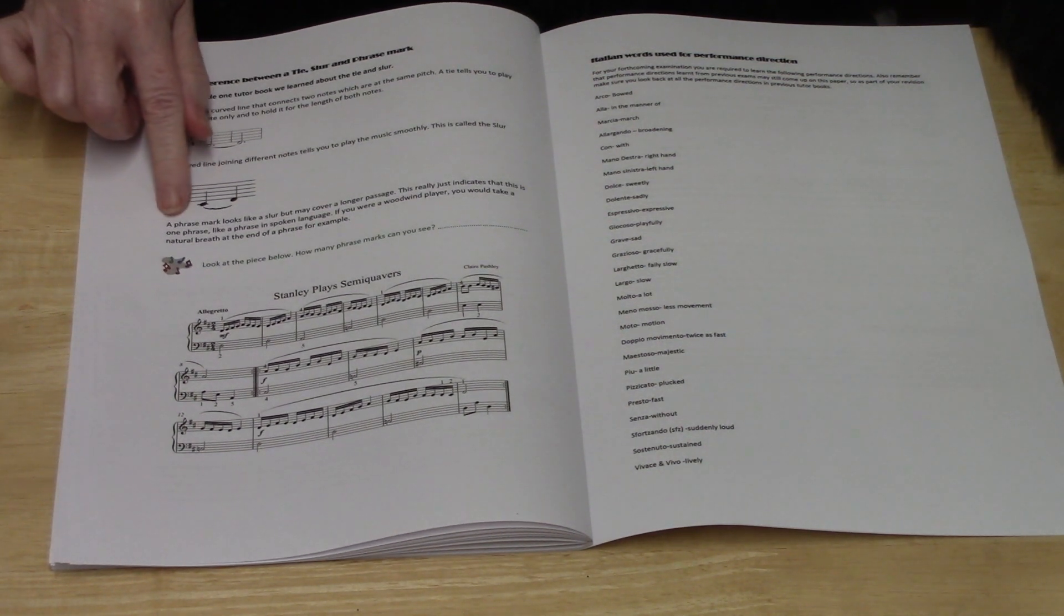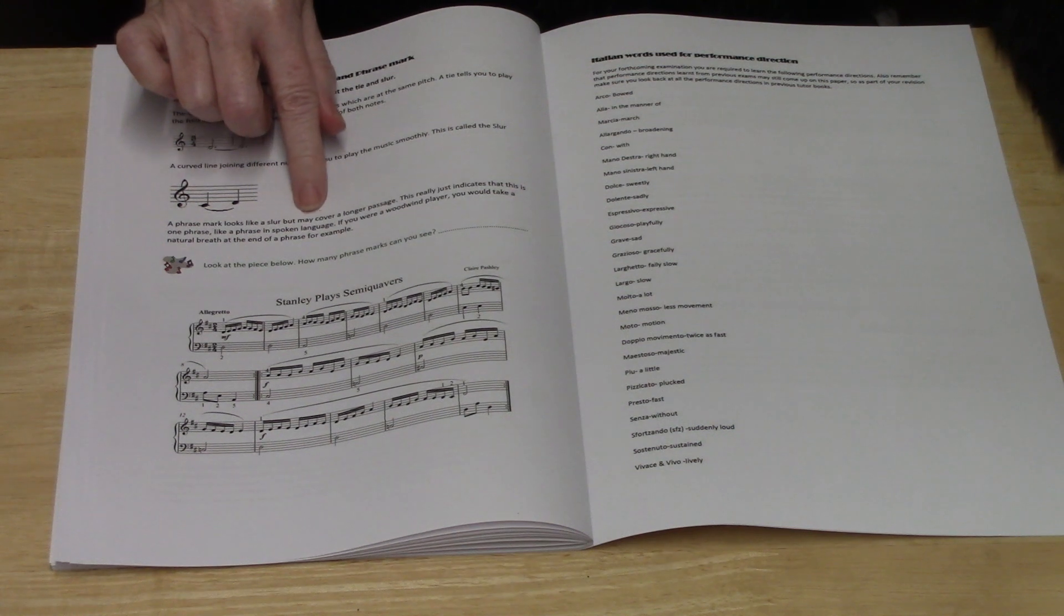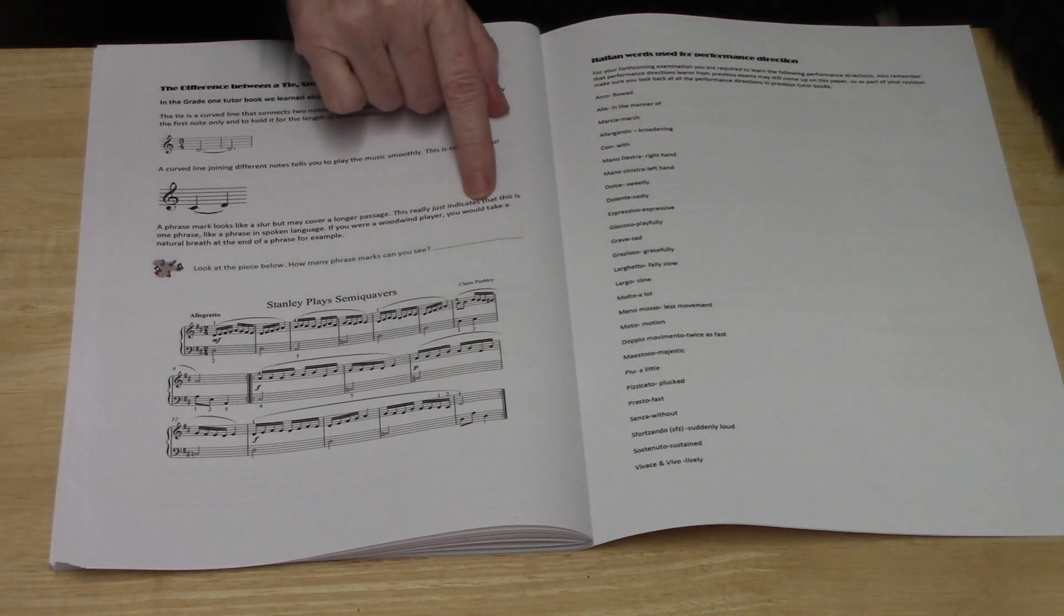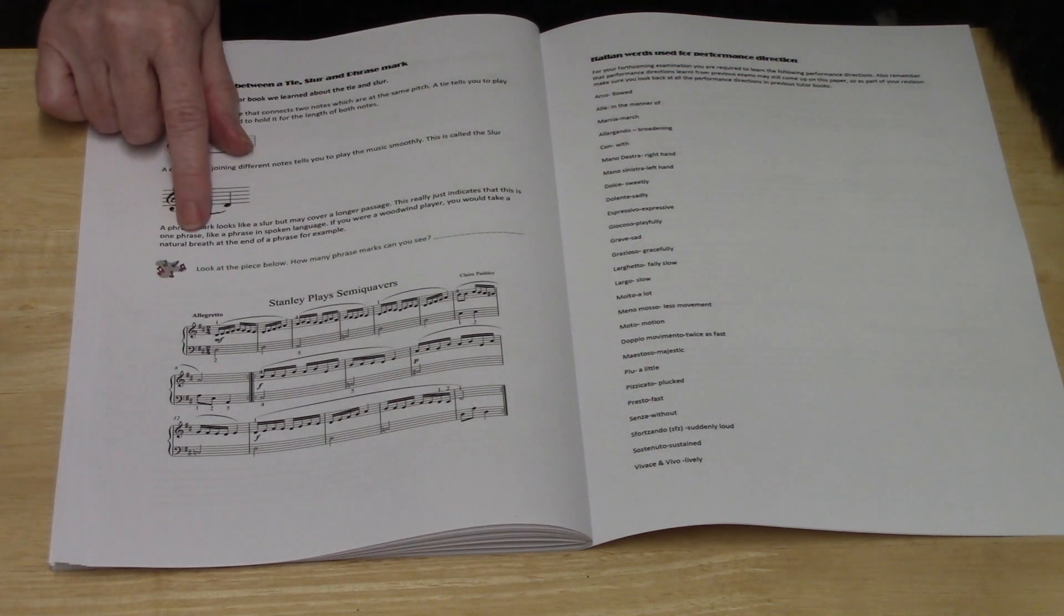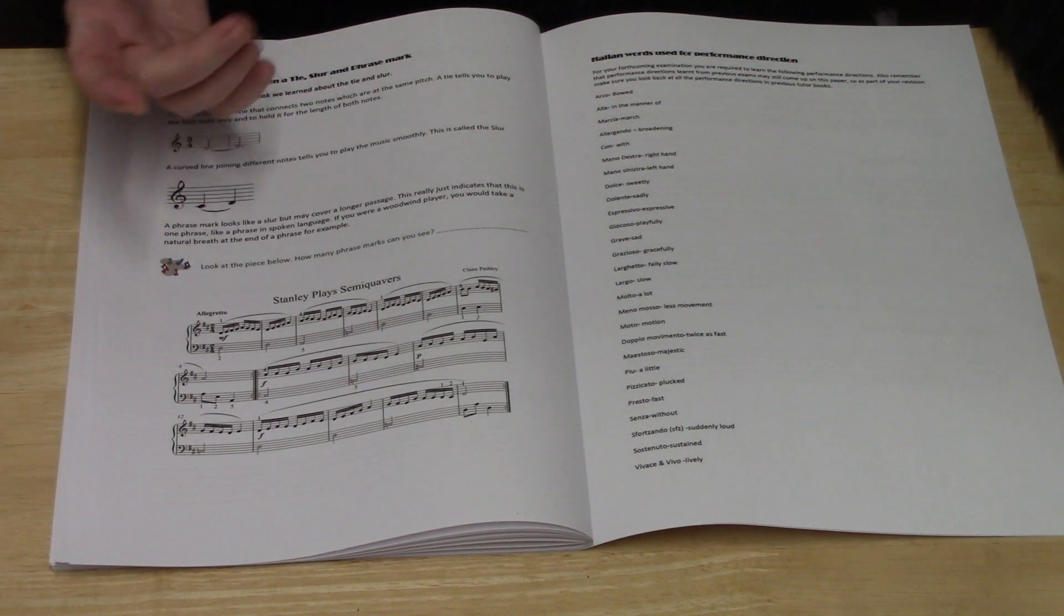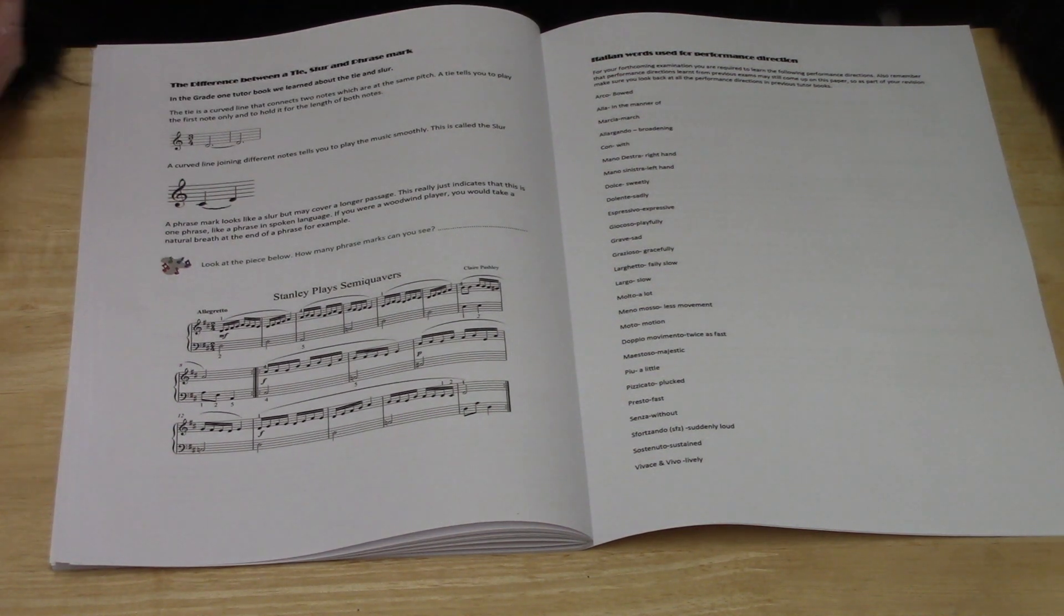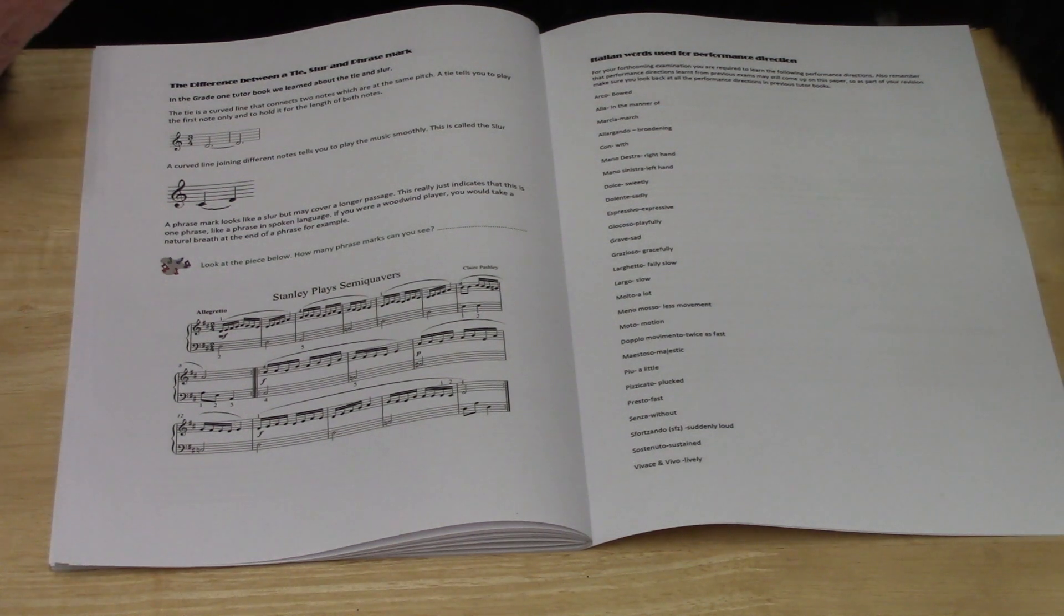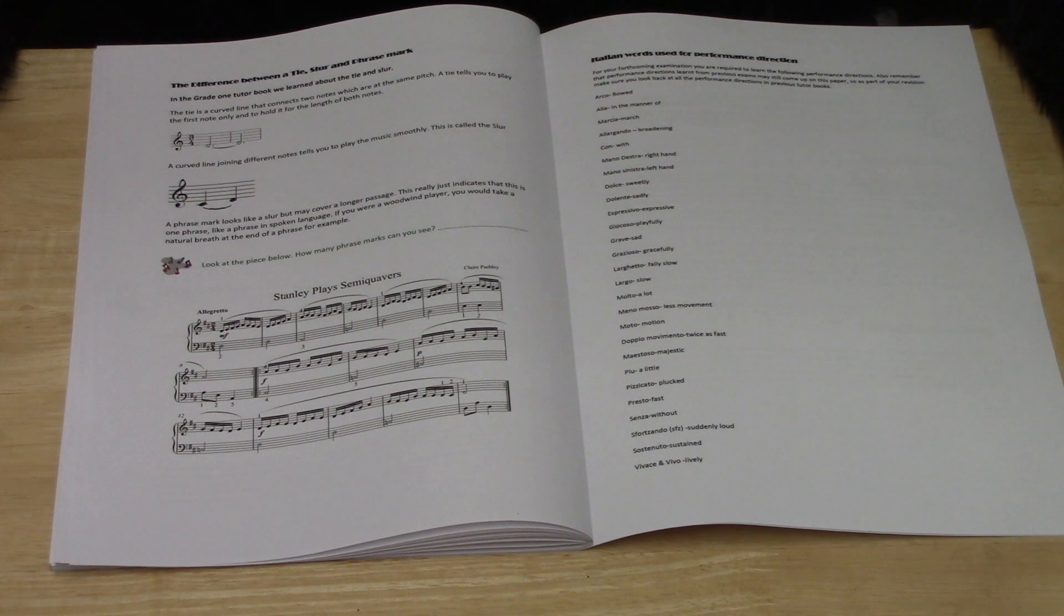Now the phrase mark looks like a slur but may cover a longer passage. This really just indicates that this is one phrase, like a phrase in spoken language. So if you're a woodwind player for example, you would take a natural breath at the end of a phrase. This signifies where the breathing is.